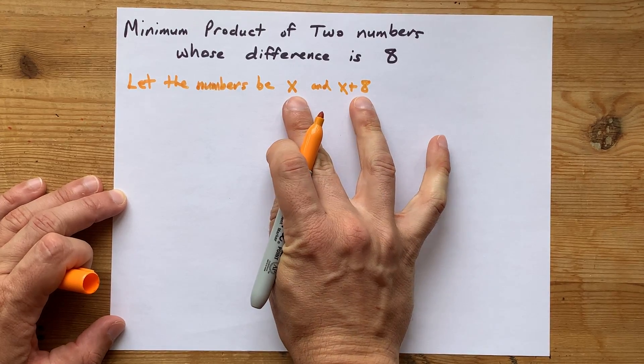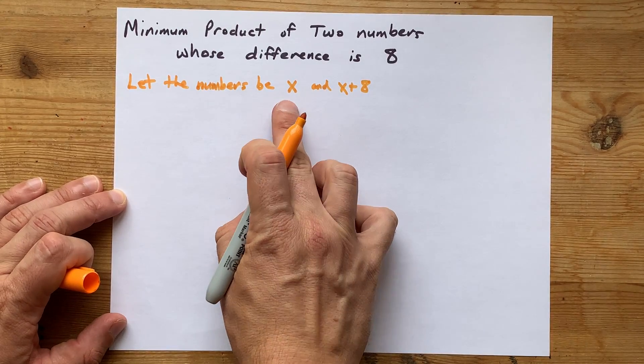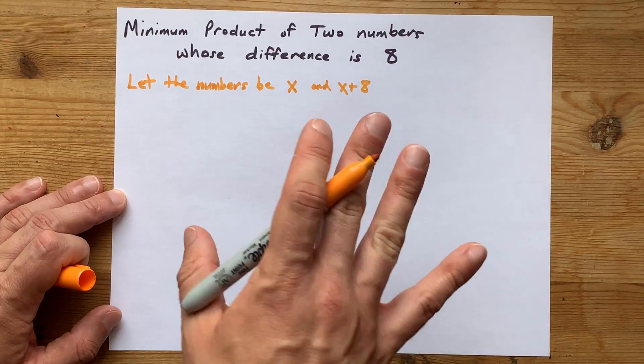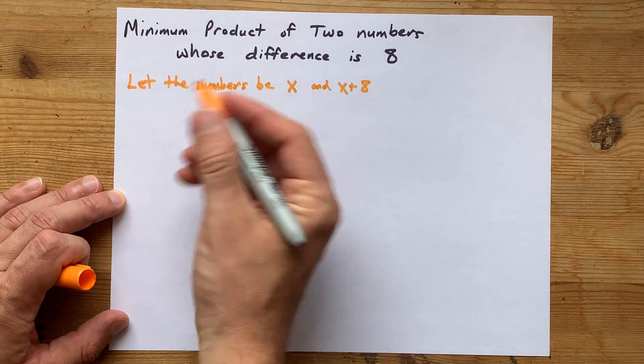Those are two numbers that differ by 8. If x is 1, this number is 1 plus 8, which is 9. Those two numbers differ by 8. Done. Well, at least that part.